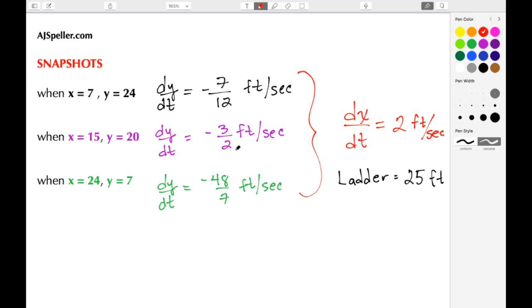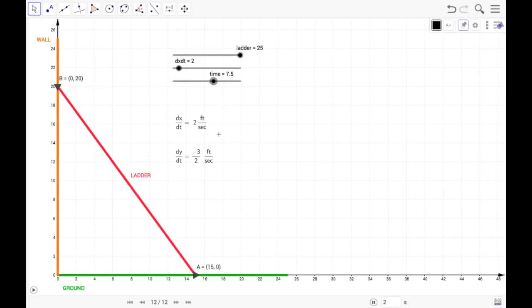If we go back, we see that our calculation was correct when we figured out negative 3/2 feet per second. And for our last one, we're going to look at when x is 24. The y value should be 7, and the rate at which it's falling is negative 48/7 feet per second. So let's take a look at that.